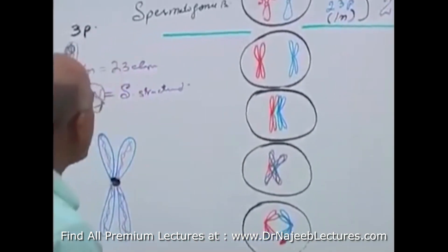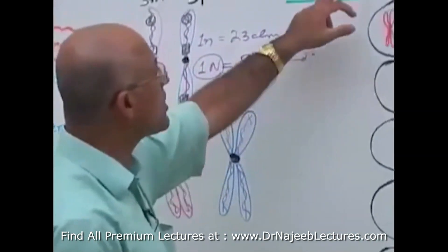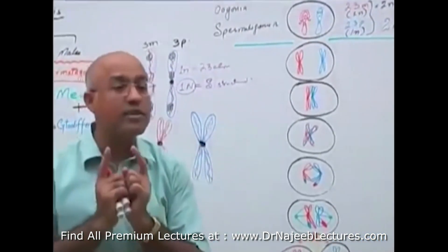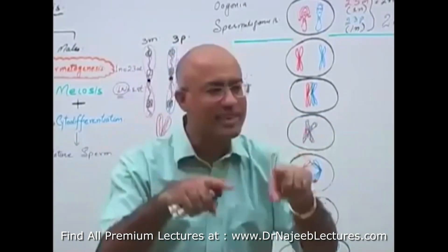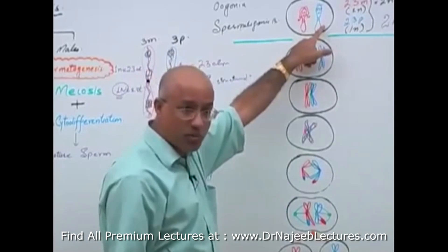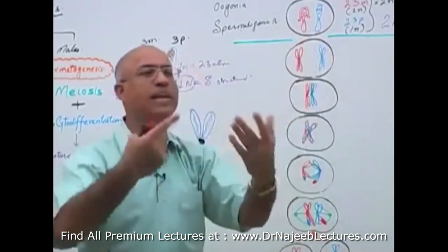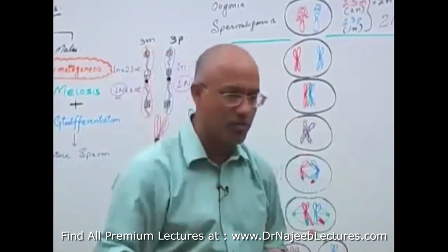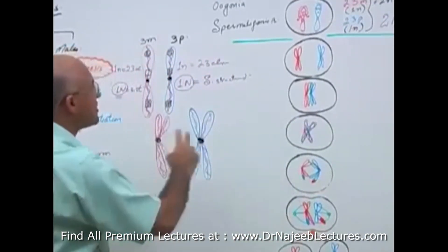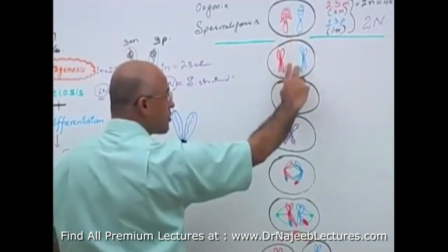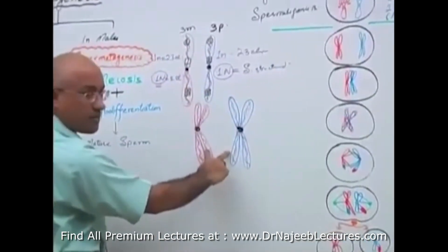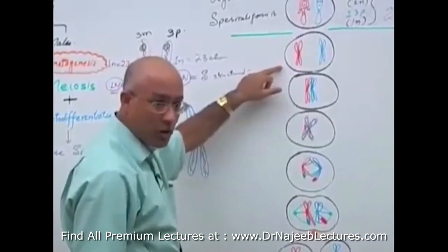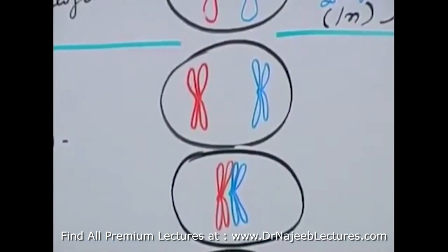Before this cell enters meiosis 1, it is going to replicate its DNA. All paternal as well as all maternal chromosomes will replicate their DNA. When all DNA is replicated, all chromosomes will become double structured chromosomes. These single structured chromosomes will convert into double structured chromosomes.